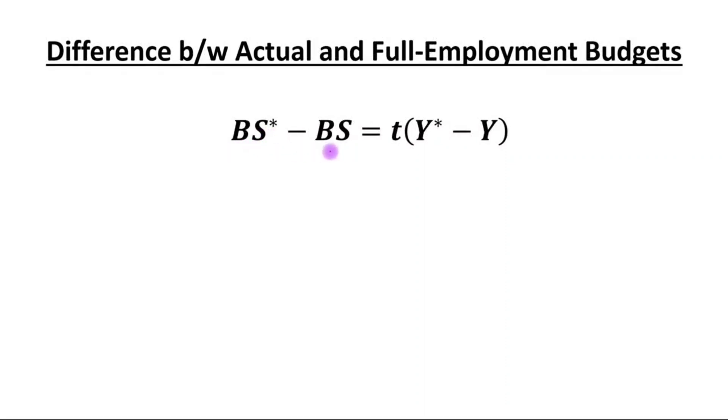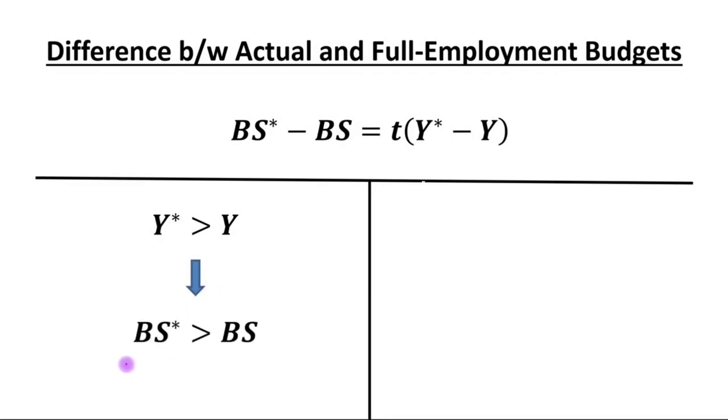The difference between actual and full employment budgets is BS* - BS = t(Y* - Y). If potential output is greater than actual output (Y* > Y), this implies the budget surplus at full employment will be greater than actual budget surplus (BS* > BS).